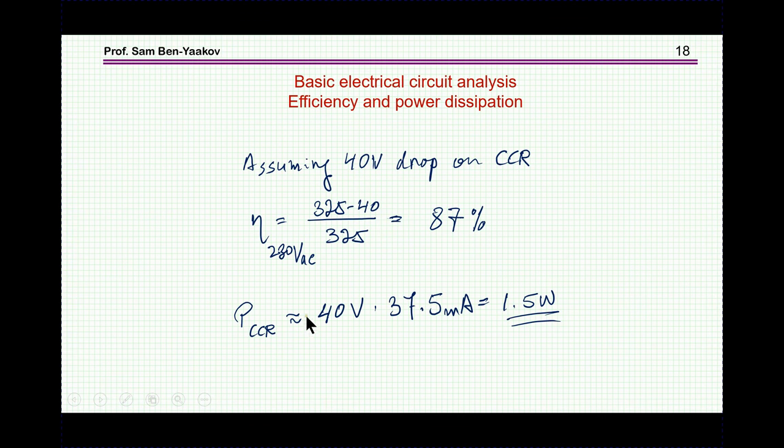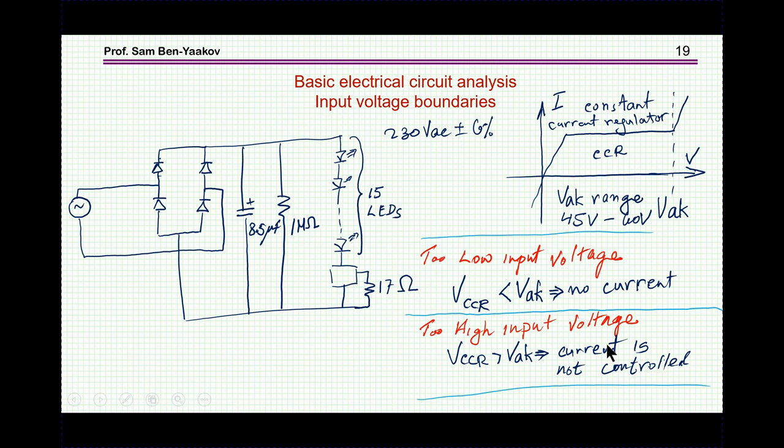Now let's have a look at the efficiency of this unit. If I assume that the voltage drop on the constant current regulator is about 40 volts, it'll be something in this region for the proper design, then the efficiency will be the voltage on the diodes, which is 325 minus 40, divided by 325, which is about 87 percent. And the power dissipation of this IC, of this constant current regulator, will be say around 40 volts times 37.5 milliamp, which is 1.5 watts, which is okay for this DPAC device.